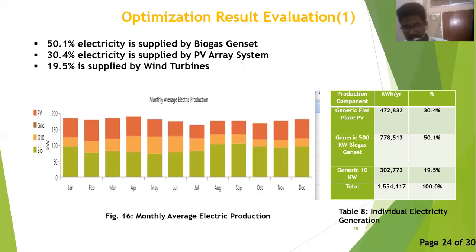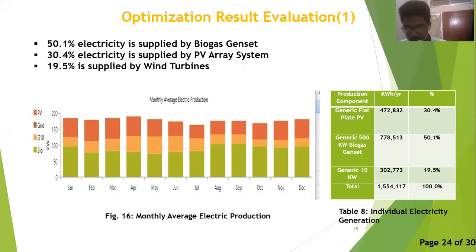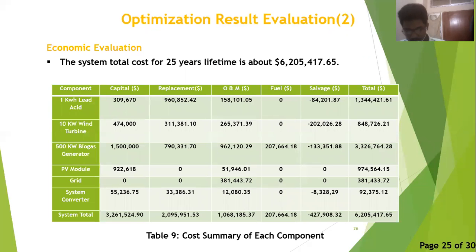Figure 16 illustrates the monthly average electric production for the hybrid system and the table shows individual electricity production of each generator type. Here, 50.1% of the load demand is produced by the biogas genset, 30.4% by the PV array system, and 19.4% by the wind turbines. Table 9 illustrates the cost summary for each component type in the hybrid system, showing capital, replacement, operating and maintenance, and fuel cost. The total cost of the hybrid system over a 25-year lifetime is approximately $6.21 million.